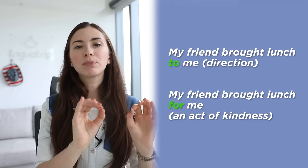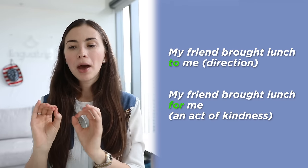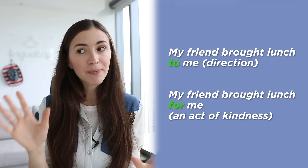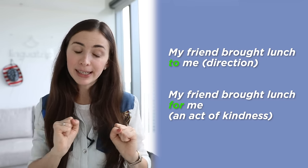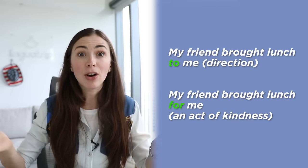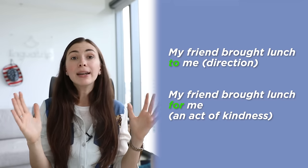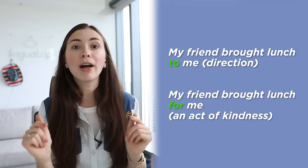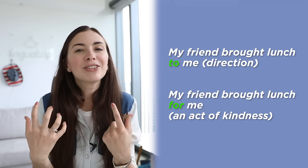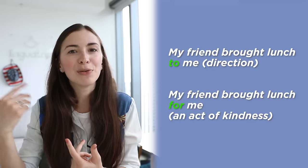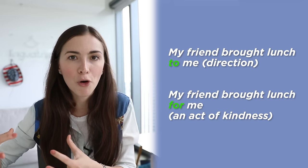Now let's look at another example where both 'to' and 'for' can be used. My friend brought lunch to me — that's direction: he brought it to my apartment and put it on my table. But 'my friend brought lunch for me' emphasizes he did something nice — he thought about me when getting lunch and got one for me.